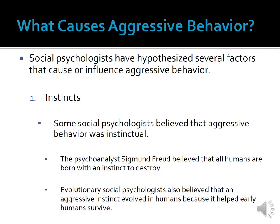Evolutionary social psychologists also believed that an aggressive instinct evolved in humans because it helped early humans survive. Early humans who were motivated to be aggressive succeeded better in obtaining and maintaining desirable mating partners, defending their young from predators and other humans, and obtaining resources necessary for survival. Social psychologists who argue that aggressive behavior is instinctual often offer examples from animals genetically similar to humans. Aggressive behavior is common in most mammals — they behave aggressively for territory, for mates, and to protect their offspring. Furthermore, one of humans' closest genetic relatives, the chimpanzee, is highly aggressive — it is the only non-human species in which groups of male members hunt and kill other members of their own kind. Some biologists have found that chimps kill each other at about the same rate that humans in hunter-gatherer societies do.